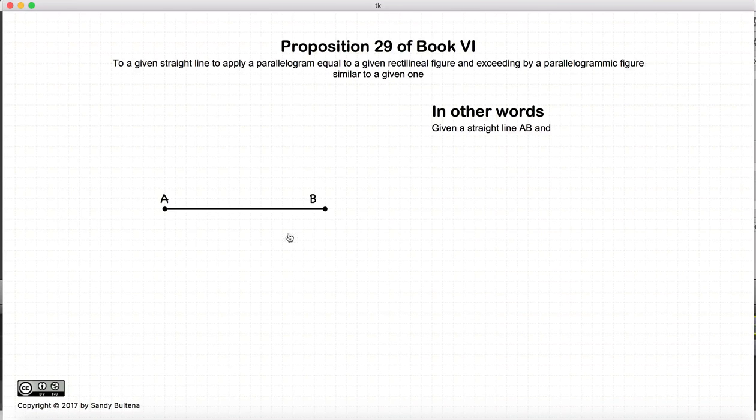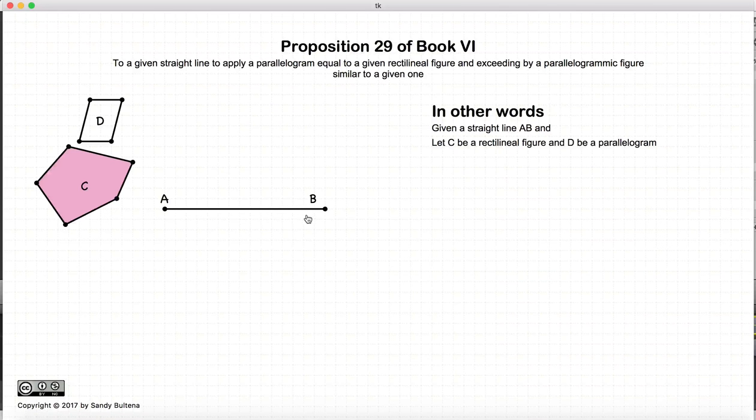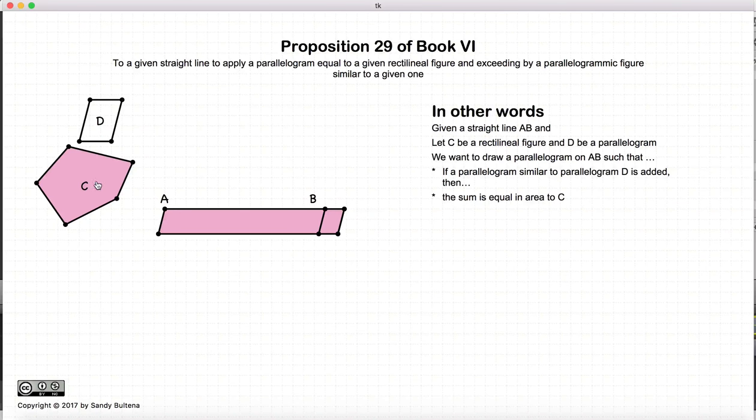In this proposition, we start with the line AB, and we have a parallelogram and a polygon. What we'd like to do is draw a parallelogram on the line AB that extends past the line B in a parallelogram that is similar to D, and the total area is equal to C. So that is our goal.